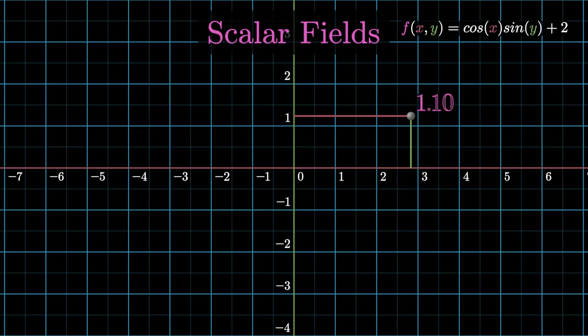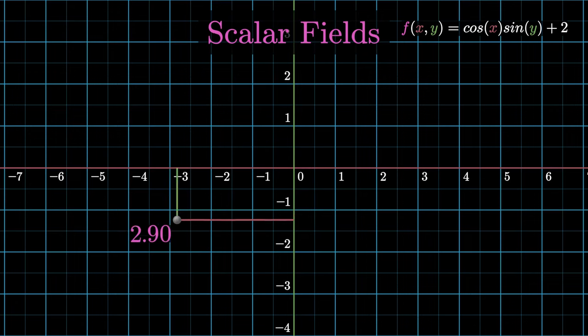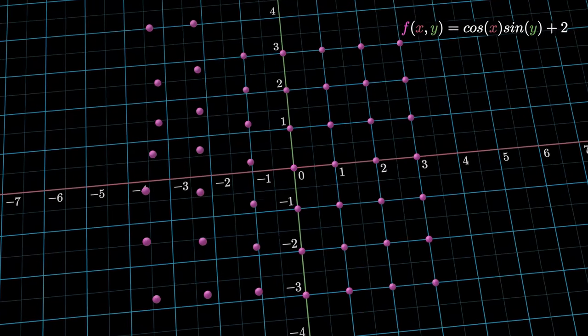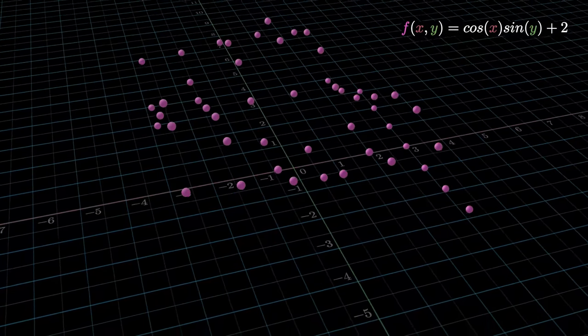Scalar fields are just functions that take multiple inputs and return a single output. The inputs in this case are the coordinates of points on the x-y plane. One way to visualize this function is to raise points on the x-y plane by a height equal to the output of the function at those points.